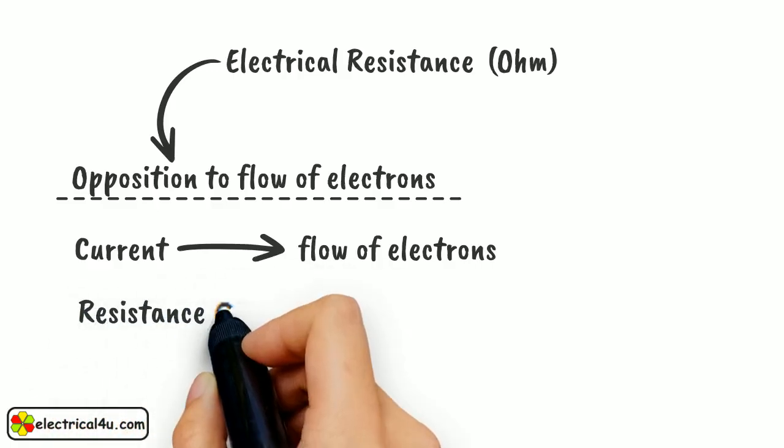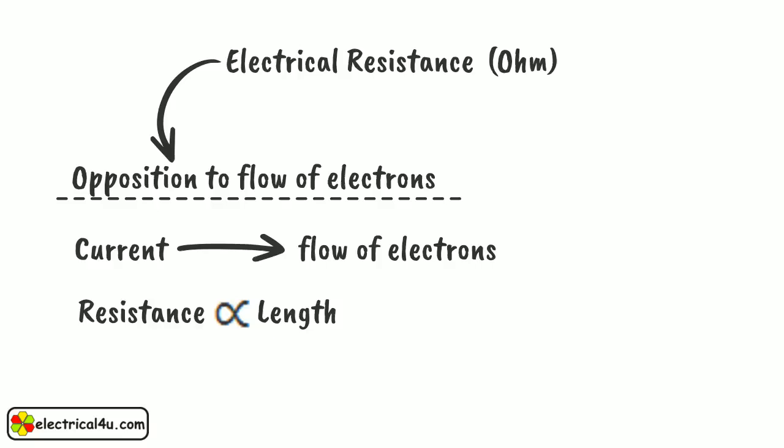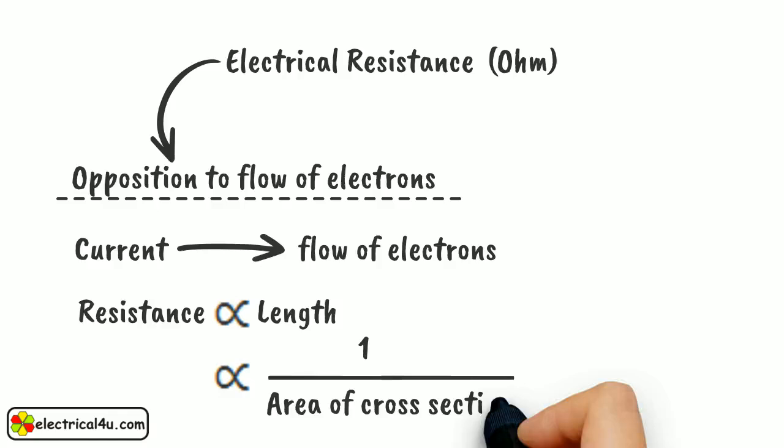Resistance is directly proportional to the length of the material and inversely proportional to the area of the cross-section of the material through which the current flows.